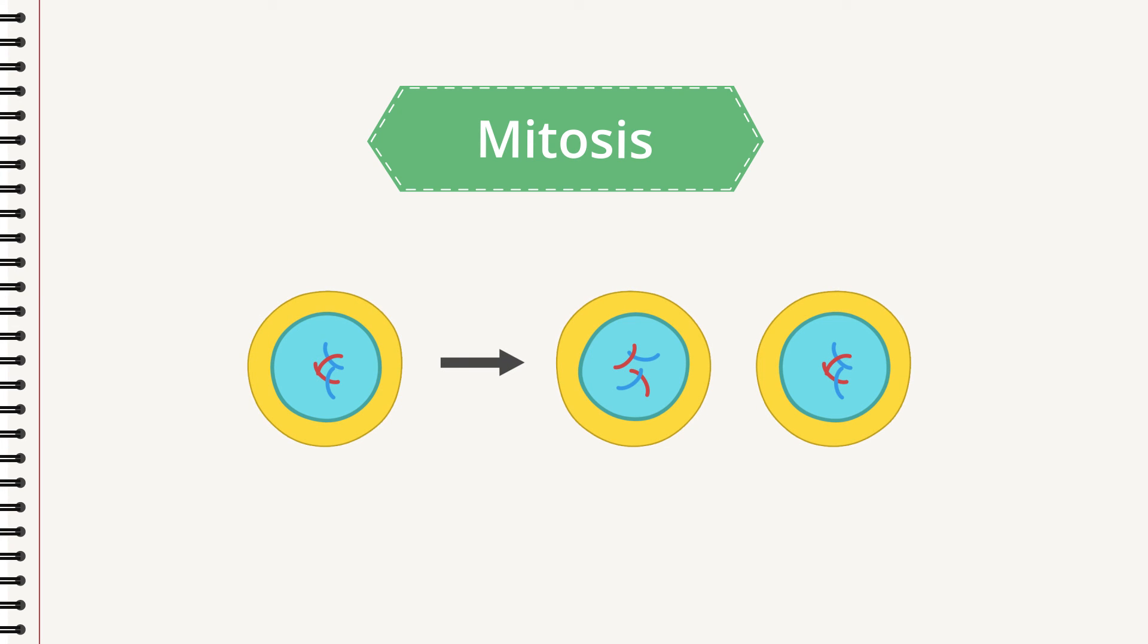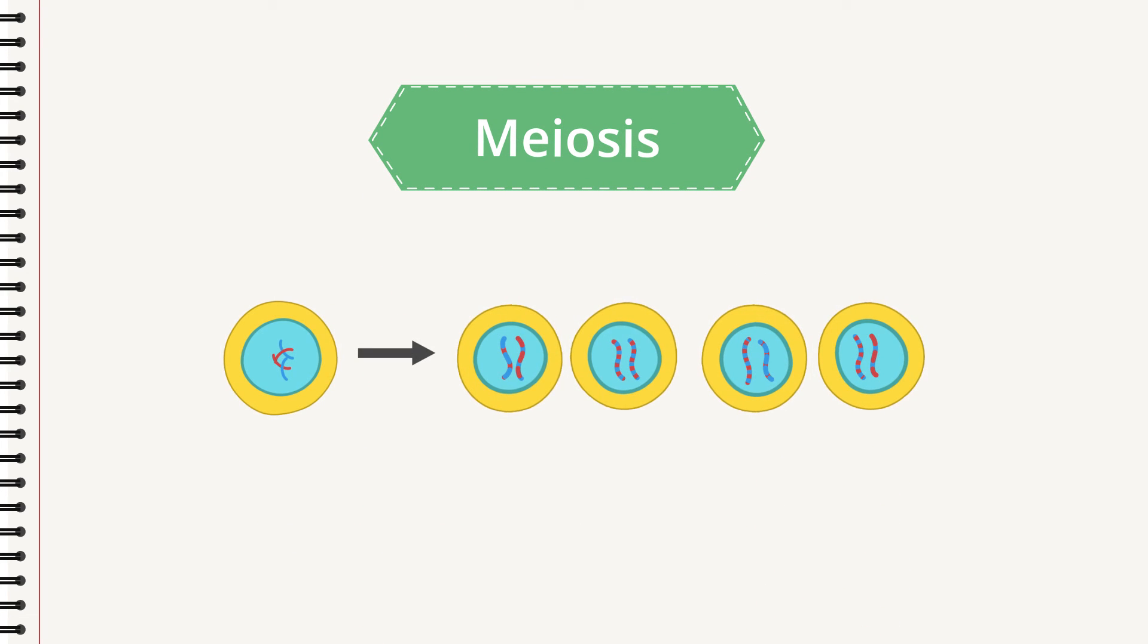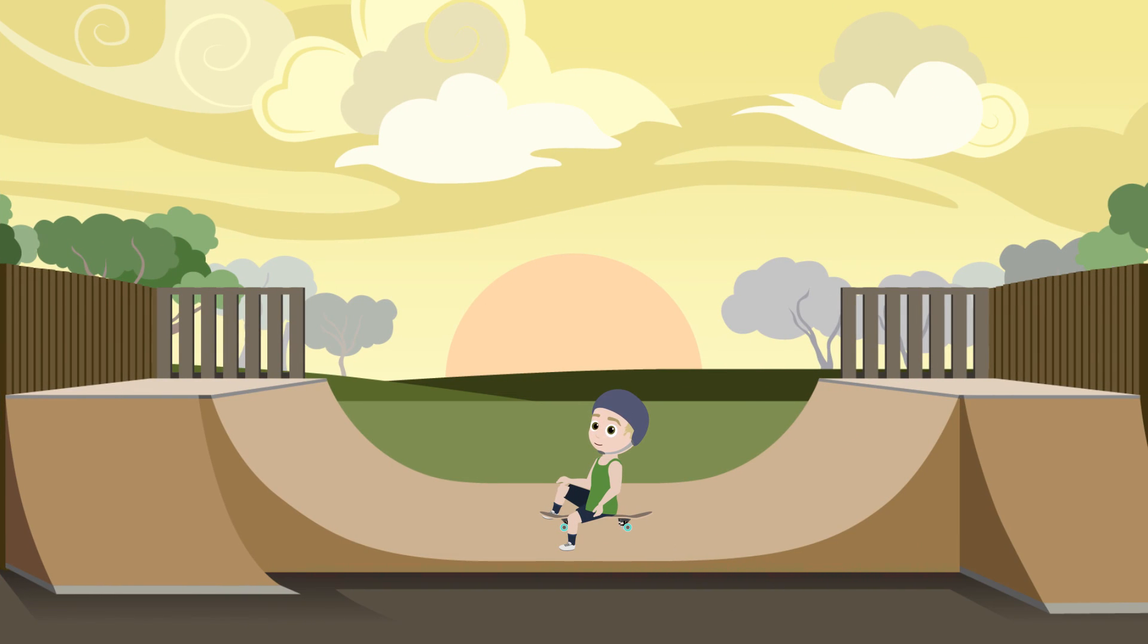In ordinary cell division, mitosis, the mother cell divides into two daughter cells with exactly identical chromosomes. In meiosis, the mother cell divides into four sex cells, each of them with a unique set of chromosomes. That's how it is, Leon: your knee heals and you grow thanks to mitosis. You are unique thanks to meiosis.